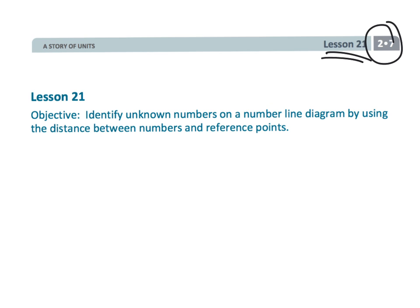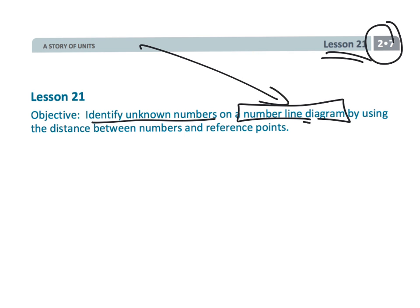That wraps up second grade module 7 lesson 21 — identifying unknown numbers on a number line and really paying attention to the reference points and the hash marks.